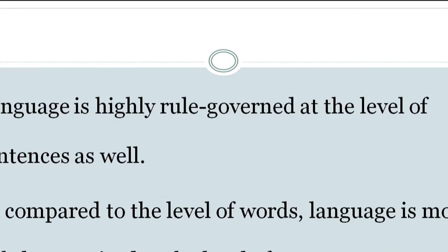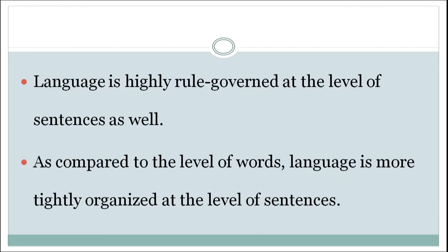Next we are going to talk about sentence construction. In a language we started from the most basic unit, which is sound, then we talked about words, and now we are going to talk about sentences. As you know, there are rules when it comes to sound and when it comes to words. Similarly, language is highly rule-governed at the level of sentences as well. At the level of sentences, language is more tightly organized — I should know where the subject will come, where the predicate will come, and how they fit together to make a meaningful sentence.